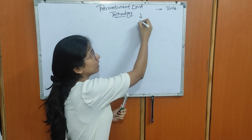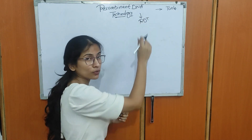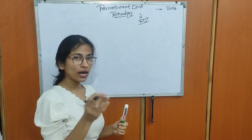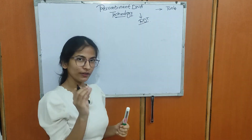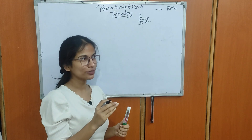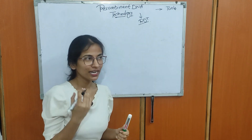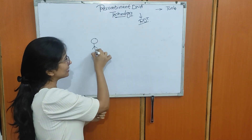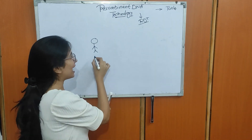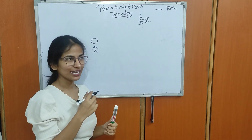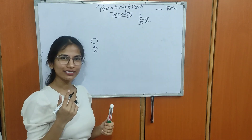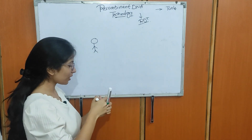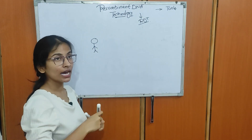We also call recombinant DNA technology as RDT. To understand this, we will take a very basic example. Let's take my example — let's say this is me, and let's say I am hungry and I want to eat something. Let's say I want to eat kheer.